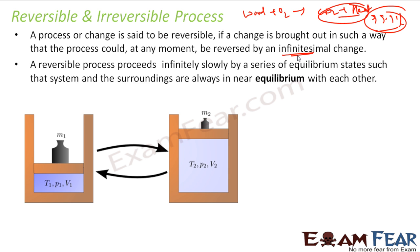The reversible process is a very slow process — not a natural process. It is done only in the lab with great care, and at every step, the system and the surroundings must be in equilibrium.